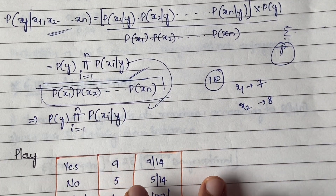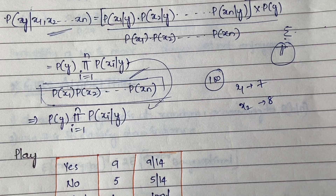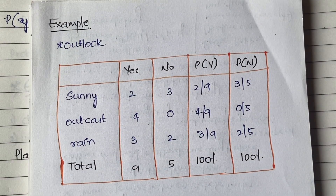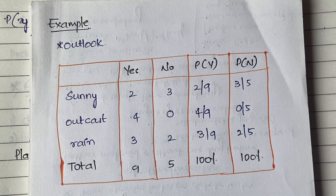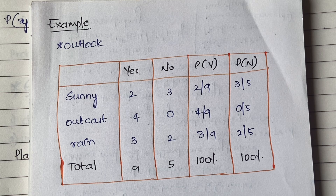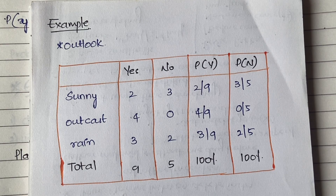Let's understand this with an example. You may remember the 'enjoy sport' concept, where we have 14 instances and attributes like outlook, humidity, and temperature — will the player enjoy the sport or not based on all these conditions? We have taken two attributes: outlook and temperature, and based on these we will decide whether the player is going to enjoy the sport or not.